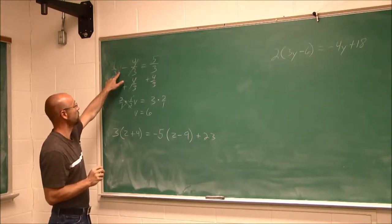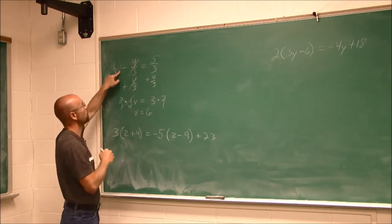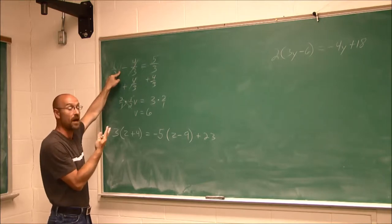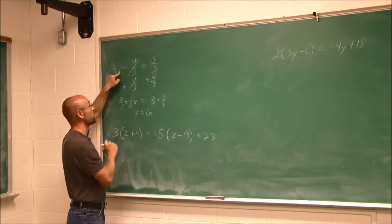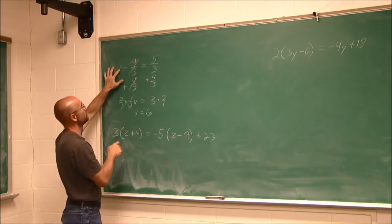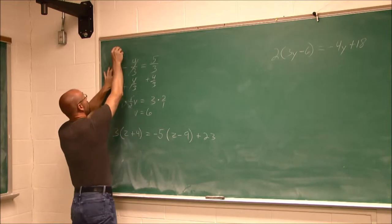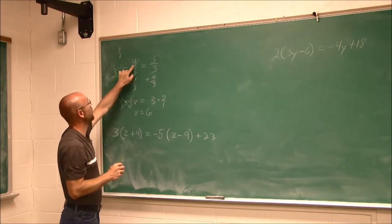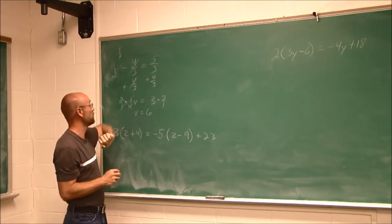Half of 6 is 3. 3 minus 4 thirds equals 5 thirds. Well, 3, I'd have to have that common denominator. And sometimes checking your work can be more time consuming than finding the solution, but it's a good thing to do because you want to know you're right. So half of 6 is 3. 3 is the same in terms of having a denominator of 3. I'd multiply it by 3 over 3. So I'd get 9 thirds. 9 thirds minus 4 thirds is 5 thirds. 9 minus 4 is 5 over 3. 5 over 3. So it does work.